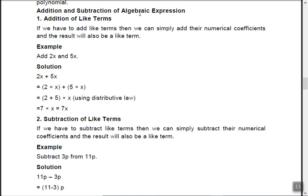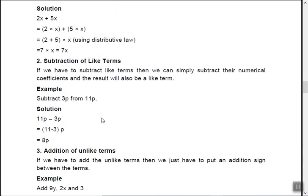Addition and subtraction of algebraic expressions: if you have to add like terms, simply add the numerical coefficients. For example, 2x plus 5x — the variable x is the same, the exponent is the same (x to the power 1), so they can be added to give 7x. But 2x squared plus 5x cannot be added because the exponents differ. Similarly for subtraction — the same logic applies, for example 11y minus 3y gives 8y. Addition or subtraction is only possible with like terms.